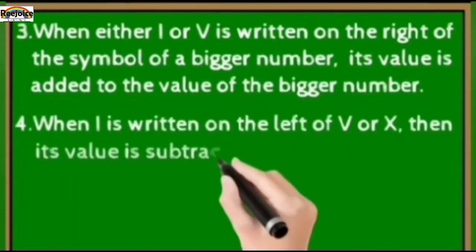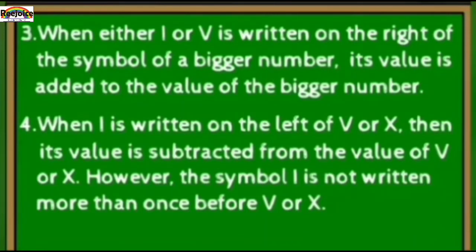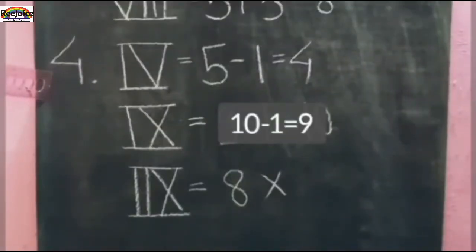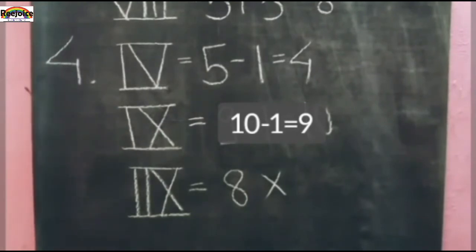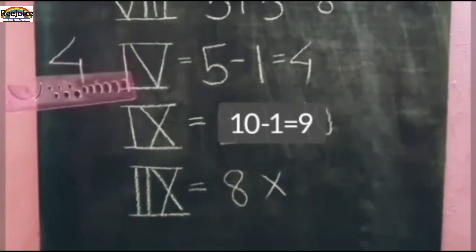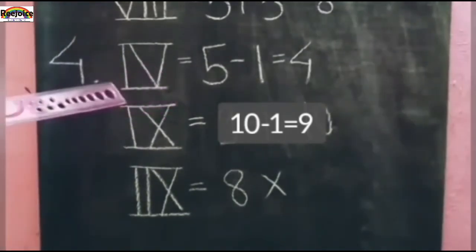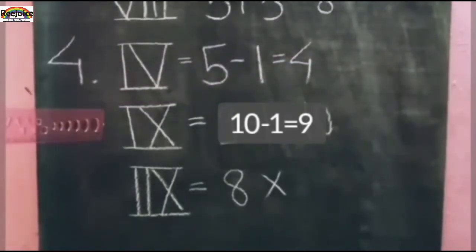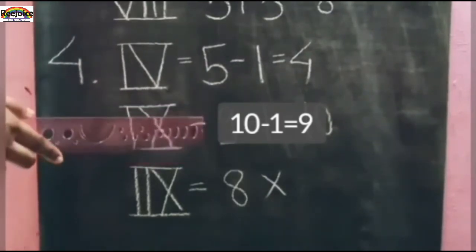Rule number 4: when I is written on the left of V or X, its value is subtracted from the value of V or X. However, the symbol I is not written more than once before V or X. Rule 4 में — जब I को V or X के left side में लिखते हैं तो वो हमेशा minus होगा, and I को हमेशा one time ही लिखा जाता है। Example: IV — I, V के left side में लिखा है, so 5 minus 1 equals 4. IX — I, X के left side में है, so 10 minus 1 equals 9.